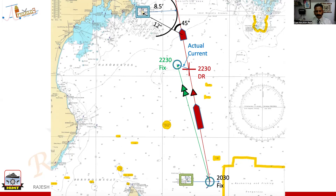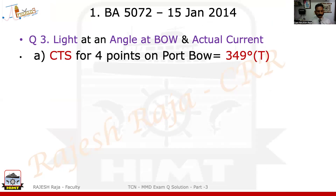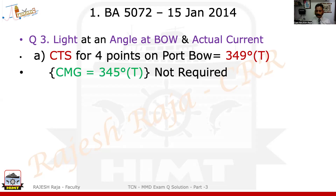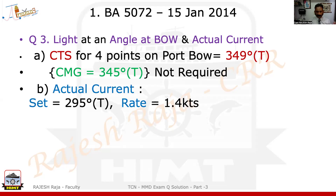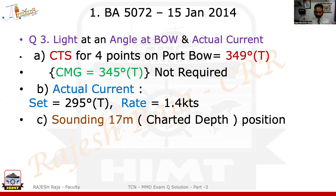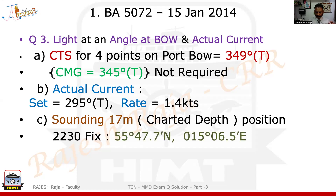Please look at the symbols — symbols are important. Please do not skip symbols in your chart work. The space for actual current was very small, but you can draw with a pencil; you need not put a triangle, you can just put an arrow — three arrows for the current. The CTS was found on the chart as 349 degrees. The CMG is also given, though it's not required. The actual current was found as 295 degrees and the rate is 1.4 knots, which means when you measured DR to fix on the chart it would have been 2.8, which is for two hours — that is the drift for two hours. The sounding spot — you can measure exactly the center of that 17 meters. This is your answer. So this problem is done.